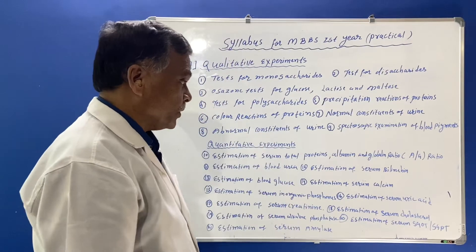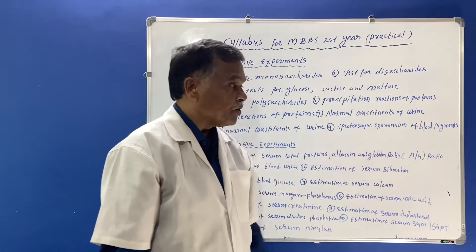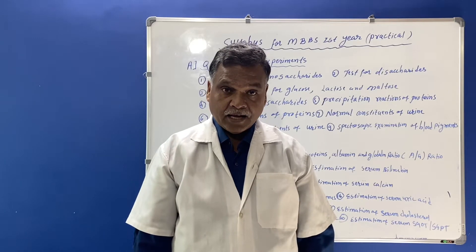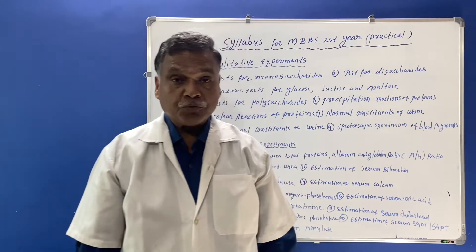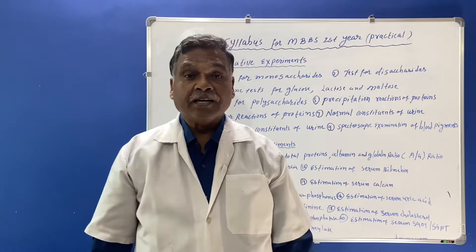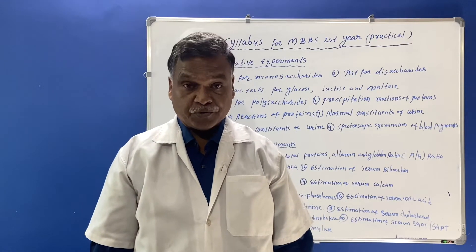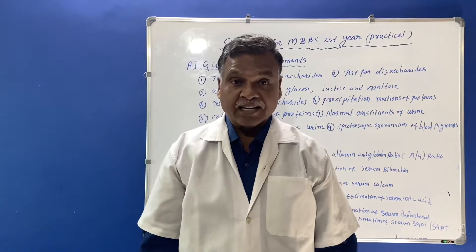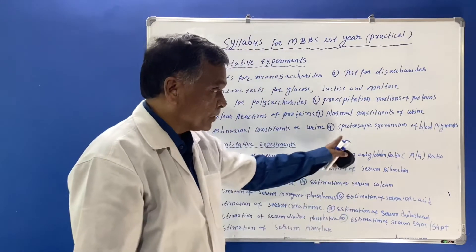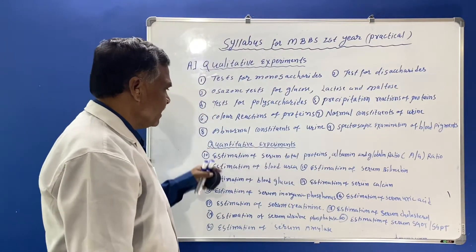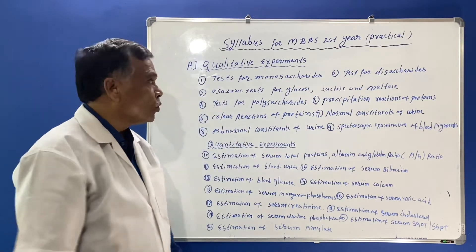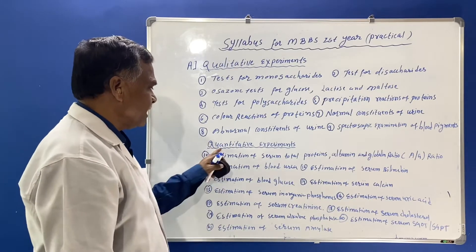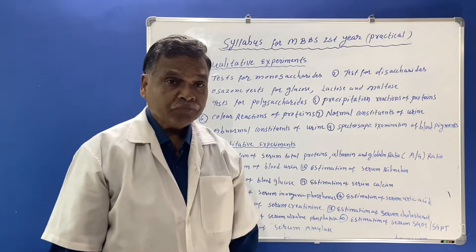Then spectroscopic examination of blood is to be done in the laboratory. The student has to observe the different hemoglobin derivatives on different wavelengths using a spectroscope. These are all the qualitative experiments.